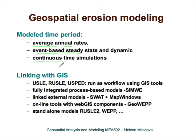How do we link these models with GIS? That depends on the type of model. Simple empirical models can usually be run as workflows using standard GIS tools — map algebra and watershed analysis tools. There are also fully integrated process-based models such as SIMWE in GRASS. Then there are linked external models, usually complex modeling systems such as SWAT, which is linked with ArcGIS or MapWindows. Some models are available as online tools with web GIS components to define your area and derive inputs. Finally, there are standalone models where data must be exchanged between GIS and the model.